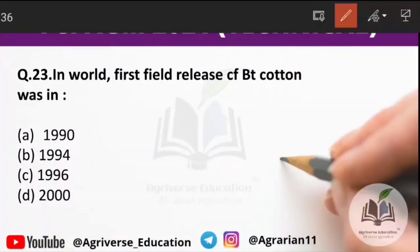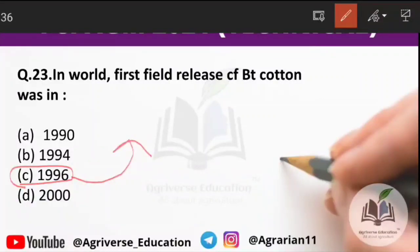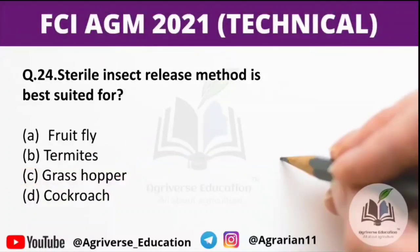Question 23: in which year was the world's first field release of Bt cotton done? The right answer is option C — 1996. So, in the year 1996, the first field release of Bt cotton was started.